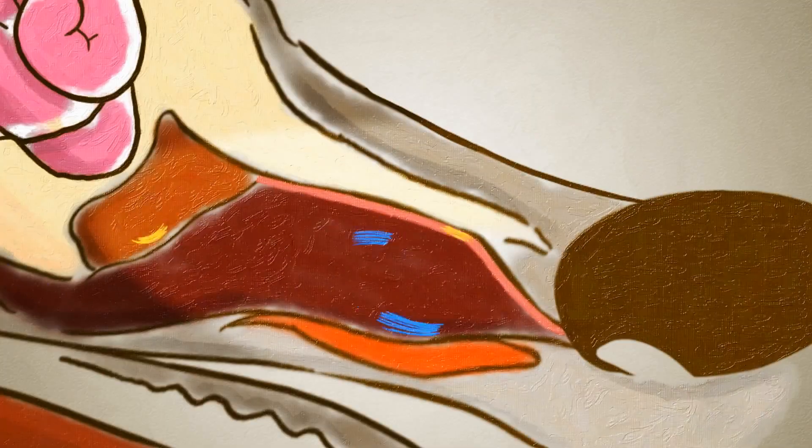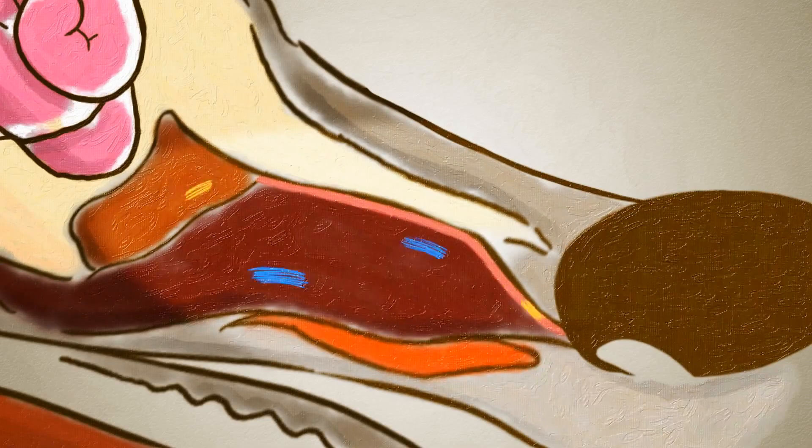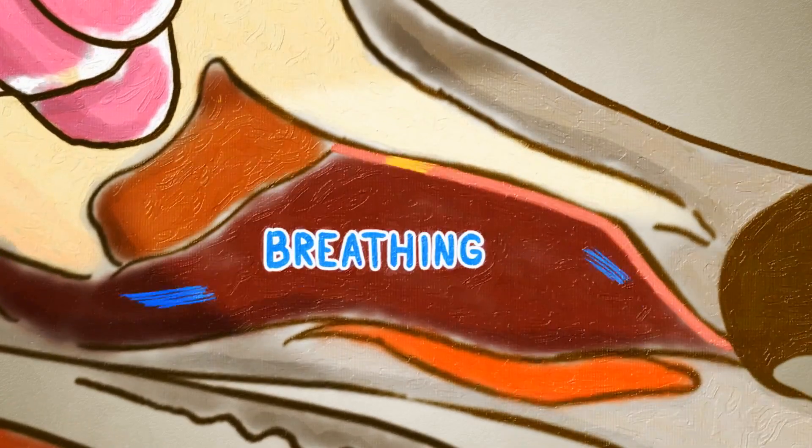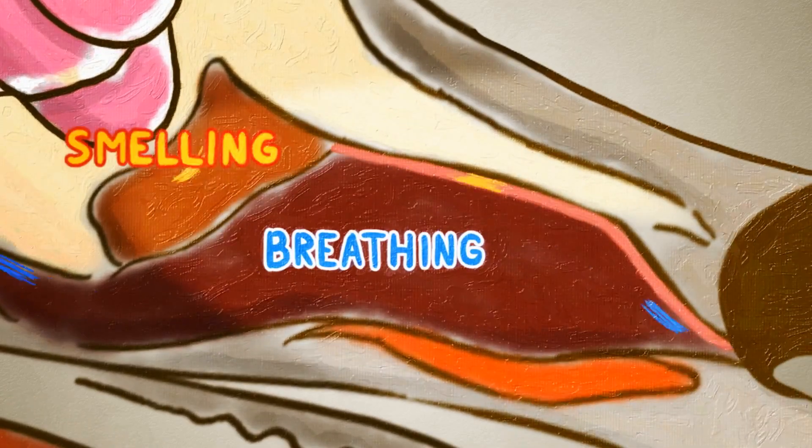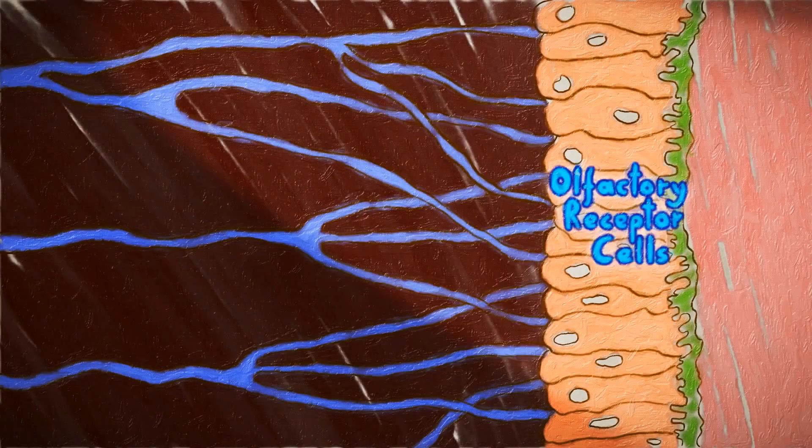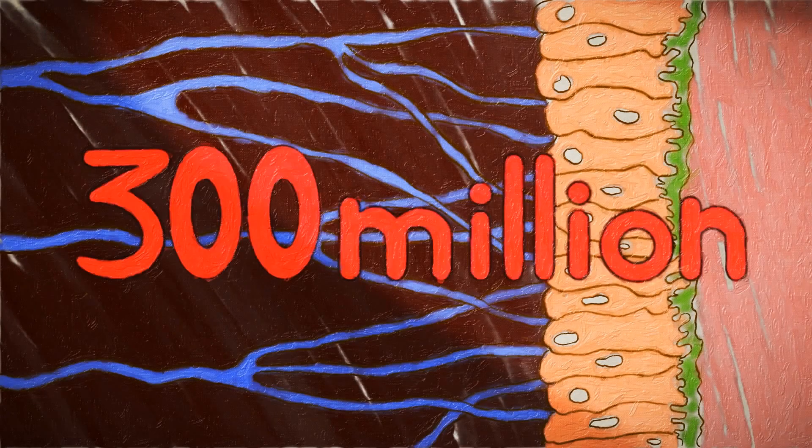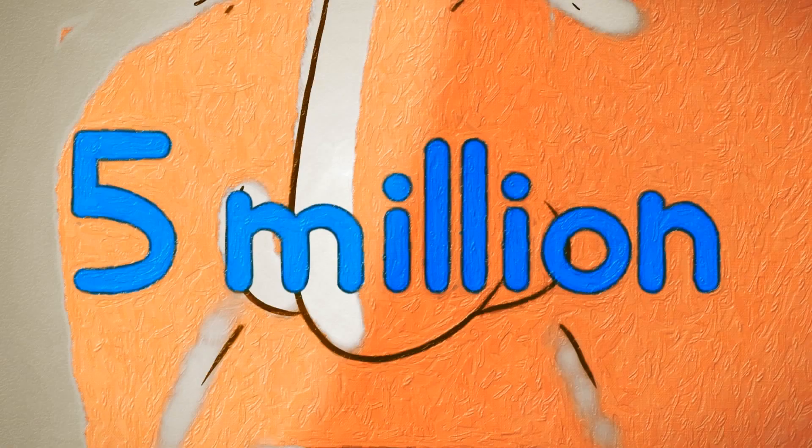As air enters the nose, a small fold of tissue divides it into two separate flows, one for breathing and one just for smelling. This second airflow enters a region filled with highly specialized olfactory receptor cells, several hundred millions of them, compared to our five million.